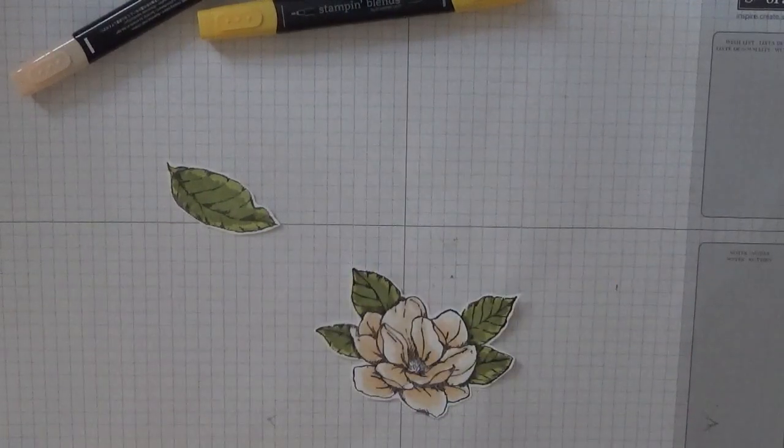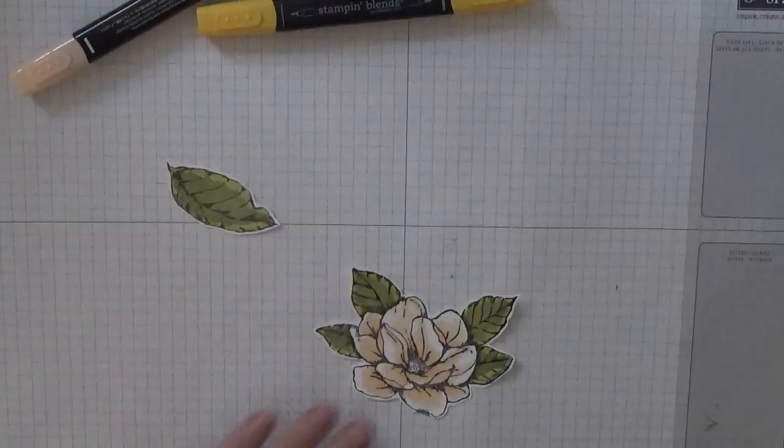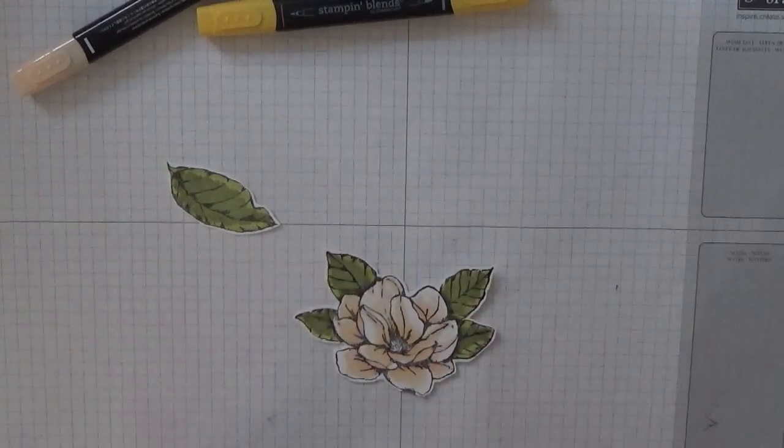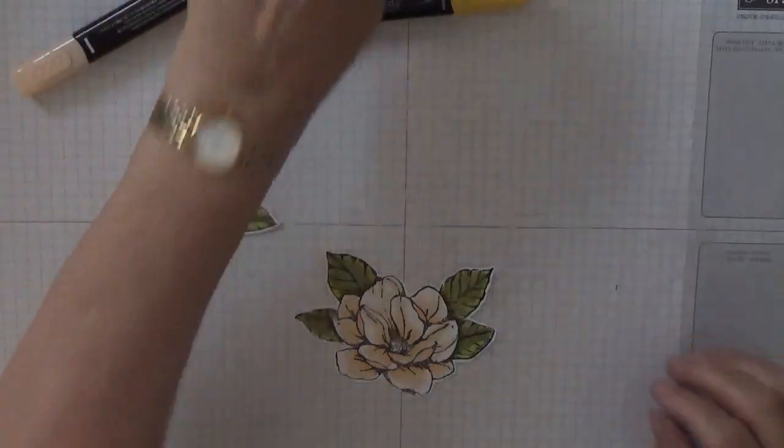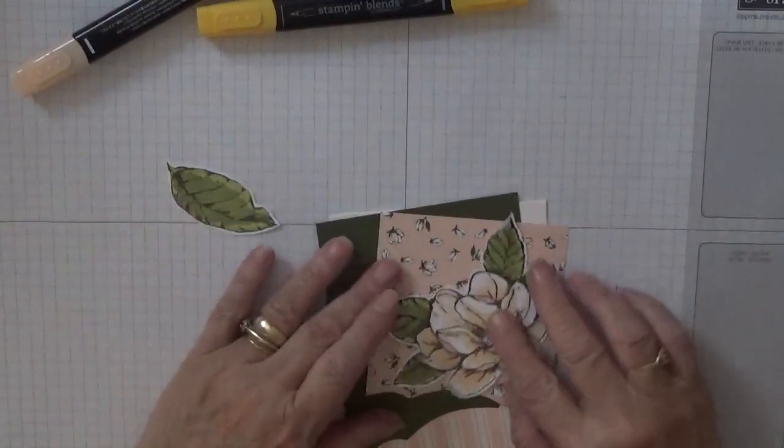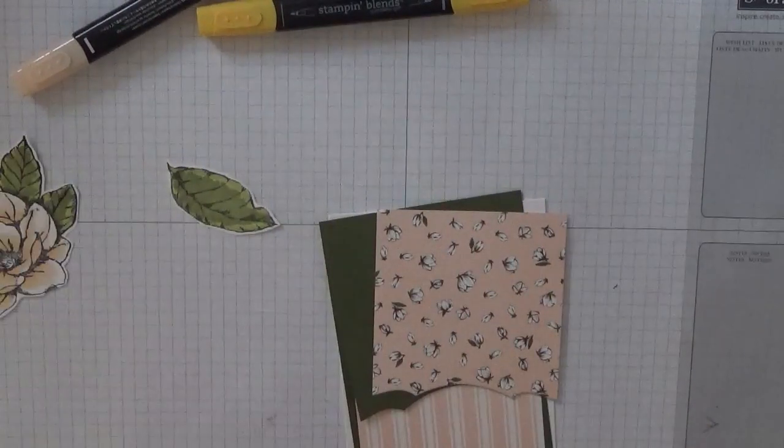I think that's it. Let's colour that bit of leaf in. And that will sit on there, somehow. But we'll figure that out once we stick it all down.